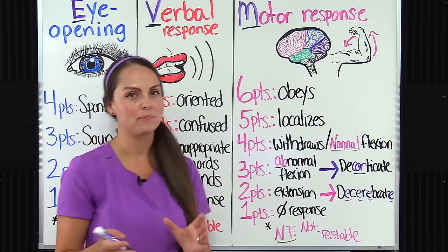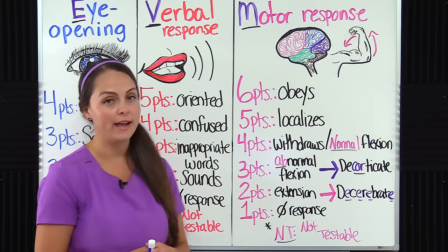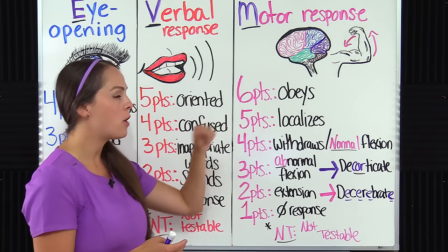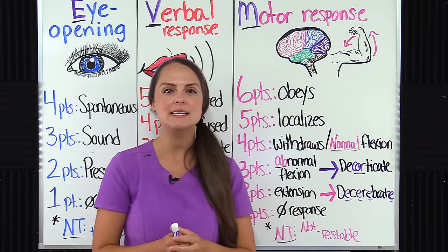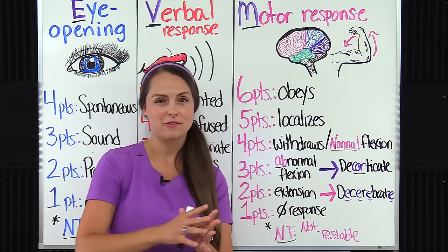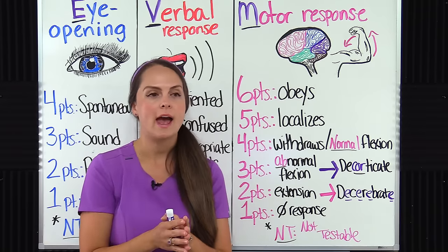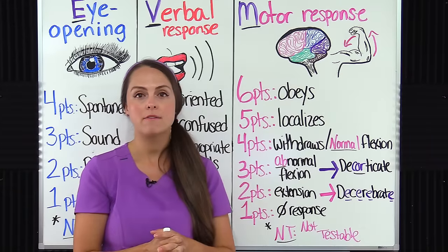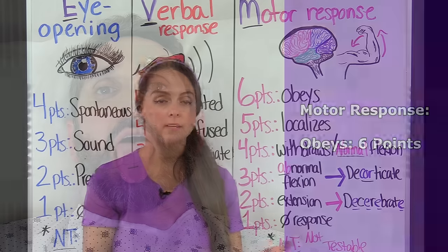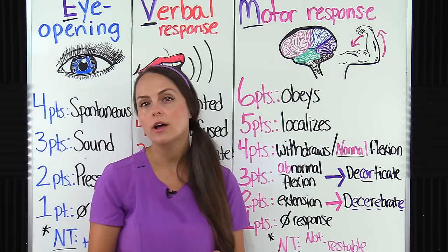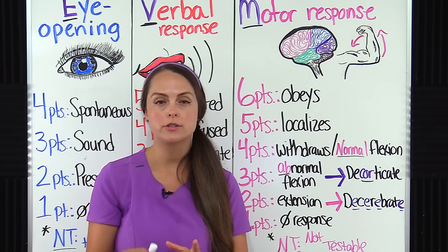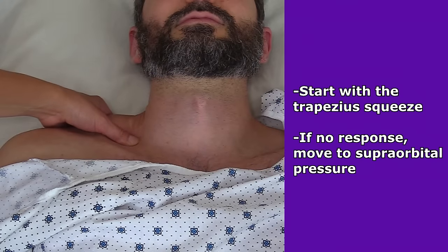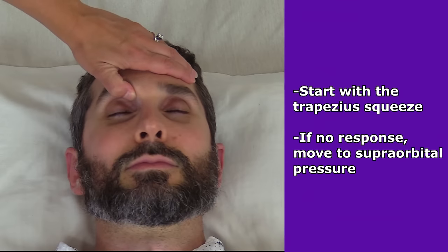Finally, we have motor response — the M. Max is six points, minimum of one; NT if sedated or paralyzed. Six points if they can obey a verbal motor command — it needs to be at least two steps to confirm it's not a reflex. For example, have them lift and open their hand, grasp your fingers, then let go; or open their mouth and stick out their tongue. If the patient cannot do this, you move to applying one of those pressure or painful stimuli using a central stimulus — start with the trapezius squeeze, and if no response, move to supraorbital pressure.